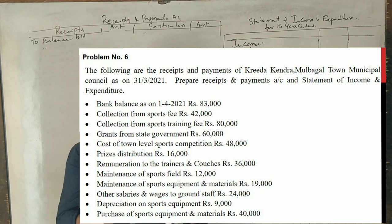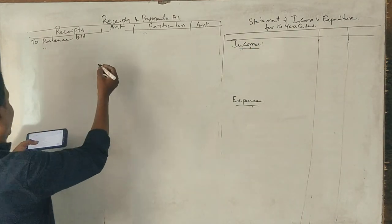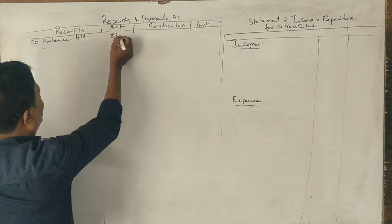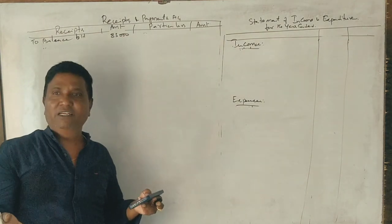Now, first bank balance on 1-4-21, correct? 83,000. Does this amount go to income and expenditure? No, it doesn't.